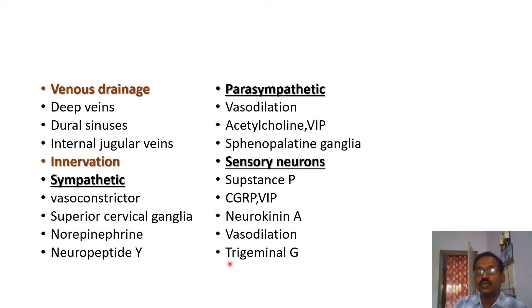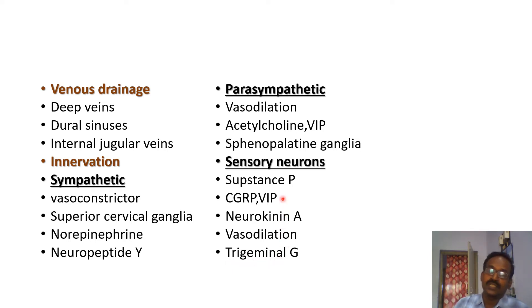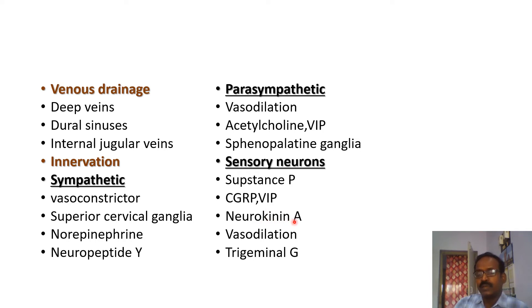Sensory neurons also produce vasodilation. Their cell bodies are located in the trigeminal ganglia, and their neurotransmitters are substance P, calcitonin gene-related peptide, vasoactive intestinal peptide, and neurokinin A. Cerebral blood vessels are more sensitive to pain, but they have fewer pain fiber innervations.